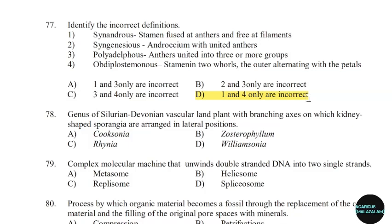78th question: Genus of Silurian-Devonian vascular land plant with branching axes on which kidney-shaped sporangia are arranged in lateral positions. Correct answer: Option B.